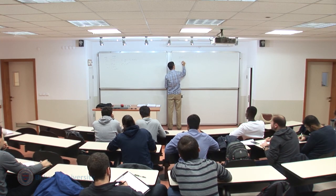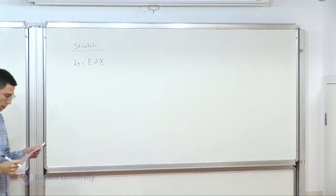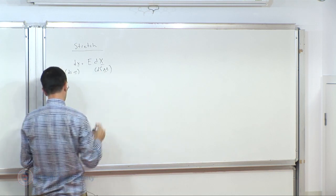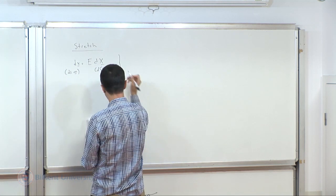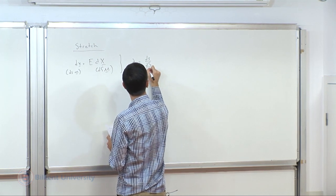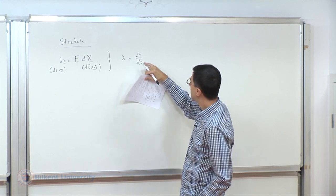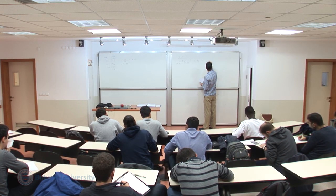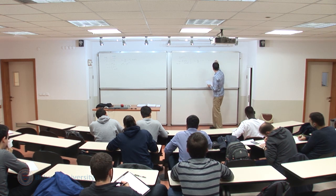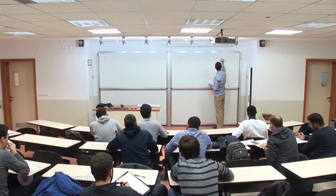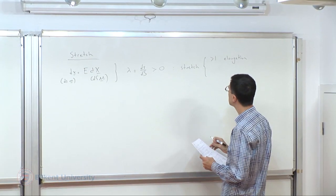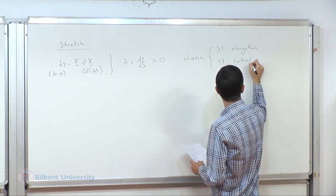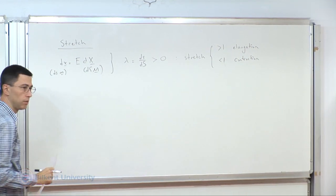Let's talk in more detail about what a stretch is and how it helps us define strain. Starting with the line element map: dx = ds·m and dX = dS·M. I can simply define the ratio λ = ds/dS. Both lengths are positive, so λ is always greater than zero. λ is called a stretch. If λ is greater than 1, you have elongation — that infinitesimal line element is increasing its length. If it is less than 1, then it is contraction — it's decreasing its length.